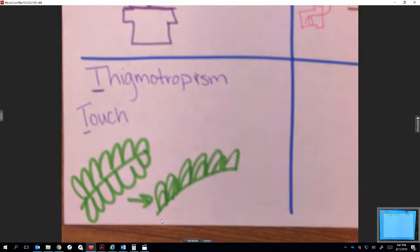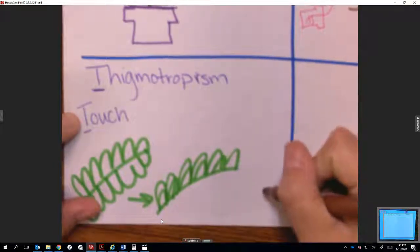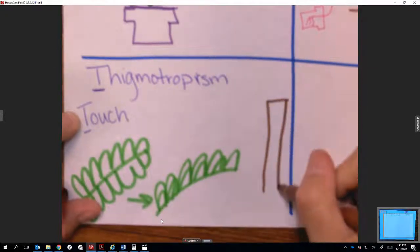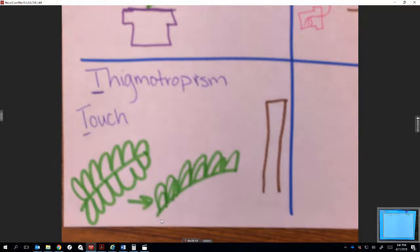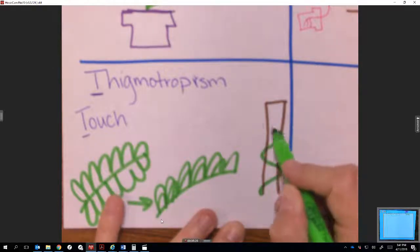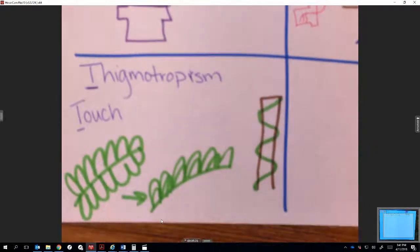Another response that you might see is when you have a plant that grows up, let's say, a fence. Ivy and grapevines do this. They look for something that they can attach to and they tend to curve around it and grow up it. That would be positive thigmotropism.